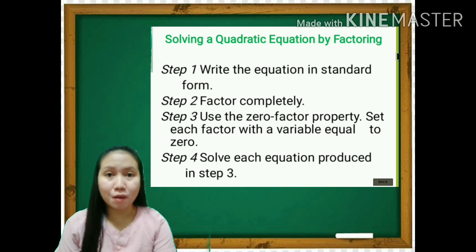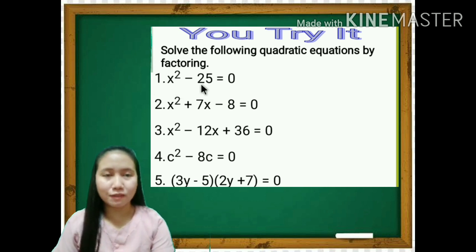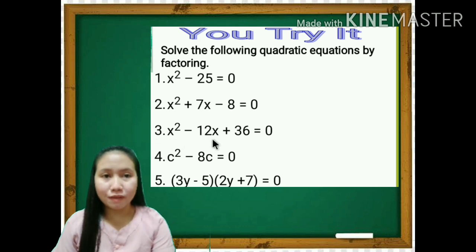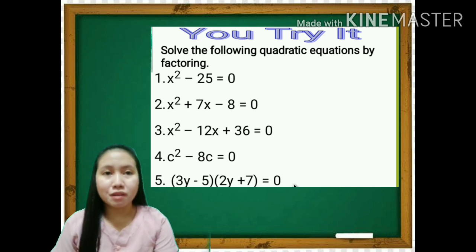I hope you understand our lesson for today and are now ready for practice. Solve the following quadratic equations by factoring: Number 1, x squared minus 25 equals 0. Number 2, x squared plus 7x minus 8 equals 0. Number 3, x squared minus 12x plus 36 equals 0. Number 4, c squared minus 8c equals 0. Number 5, the quantity 3y minus 5 multiplied by the quantity 2y plus 7 equals 0. You may now answer these on your notebook. Good luck and God bless!